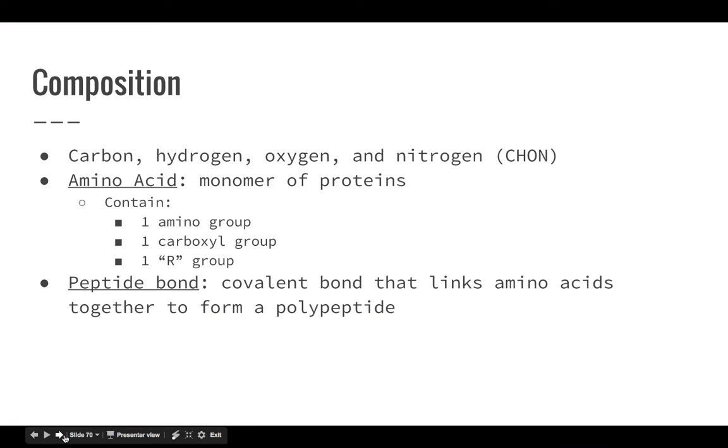Proteins are composed of carbon, hydrogen, oxygen, and nitrogen. So they are CHON. And an amino acid is a monomer of the protein. Amino acids have three parts: an amino group, a carboxyl group, and an R group. We're not going to focus on amino or carboxyl groups because that's organic chemistry, but we are going to talk some about that R group.